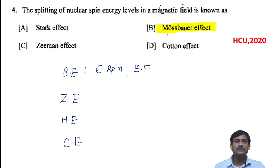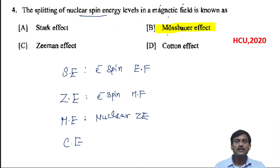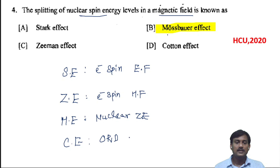The Zeeman effect is also splitting of electron spin, but in the presence of a magnetic field. The Mossbauer effect is also known as the nuclear Zeeman effect — there is a splitting of nuclear spin in the presence of a magnetic field. The Cotton effect is a change in rotation of optical rotation dispersion. So the correct option is the Mossbauer effect.